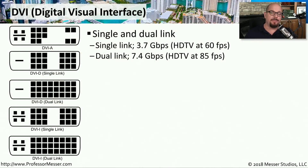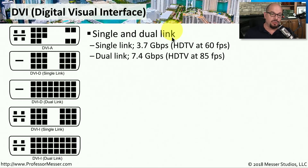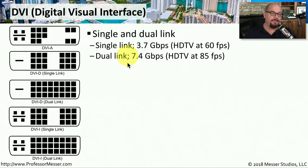Another common video type is DVI, which stands for Digital Visual Interface. There are a number of different types of DVI connections, including single and dual link. The single link supports 3.7 gigabits of throughput, allowing HDTV at 60 frames per second. For gaming and applications needing higher resolutions, you can use a dual link DVI connection, which extends throughput to 7.4 gigabits per second, supporting HDTV at 85 frames per second.